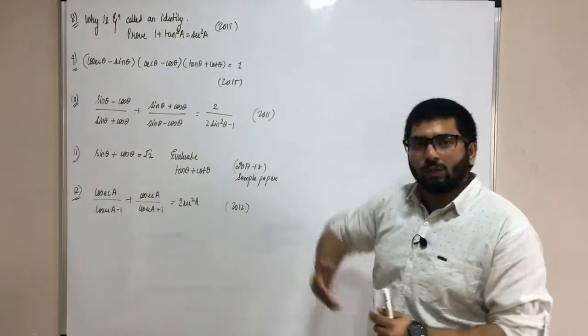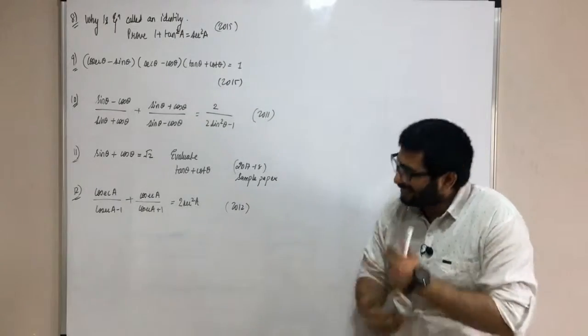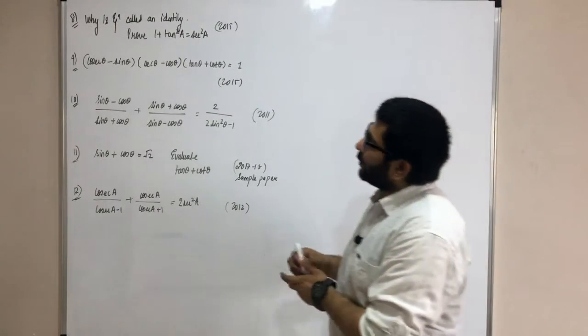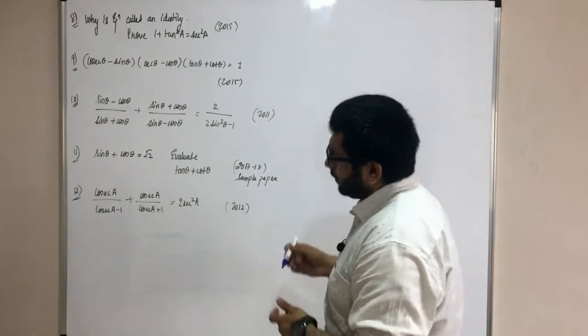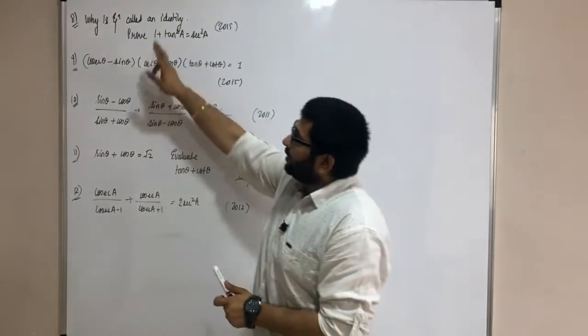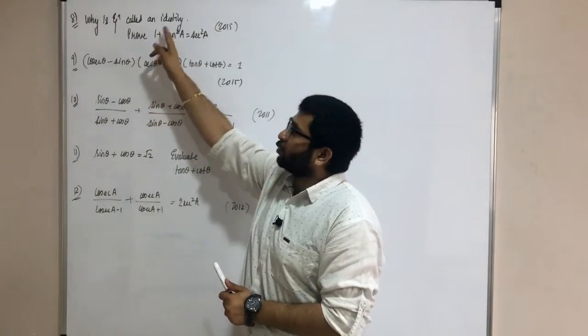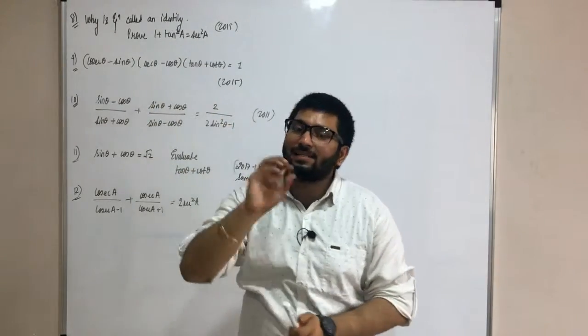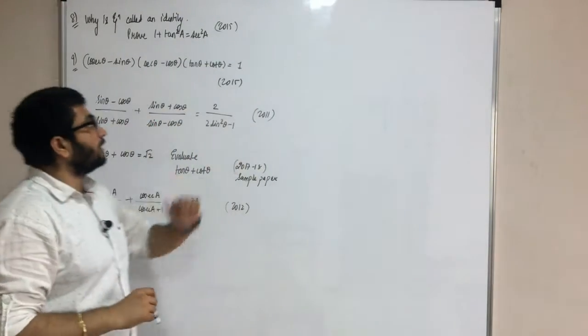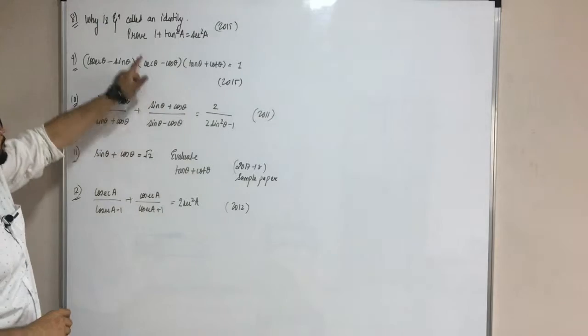Now, once you have done these 12 questions, let's go for the solution. Let's see the solution for the 8th question: why is an equation called an identity? This definition was asked in the 2015 examination.